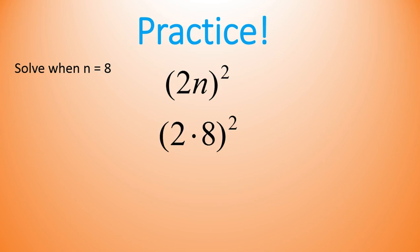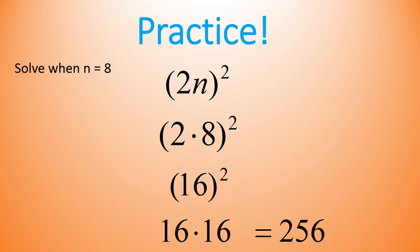Your first step for solving should say 2 times 8 to the power of 2. We read this as the quantity of 2 times 8 to the power of 2. 2 times 8 is 16. It's inside parentheses, so that gets simplified first. Then we raise 16 to the power of 2, which is 16 times 16, and that gives us 256. That's how we solved it. Is that what you got?